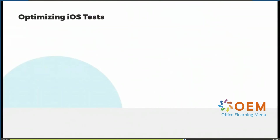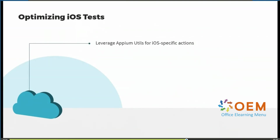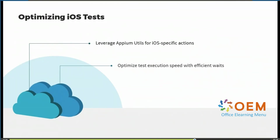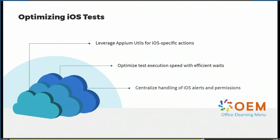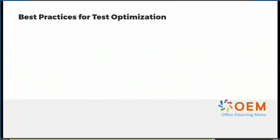How do we optimize iOS tests? We can start the optimization process by leveraging APM utils for iOS-specific actions. Another technique is to optimize test execution speed with efficient waits. We can also centralize handling of iOS alerts and permissions using a centralized method.